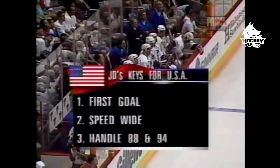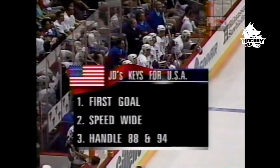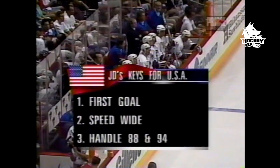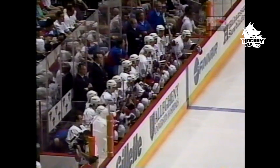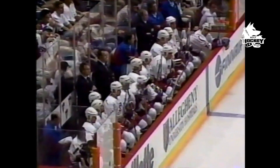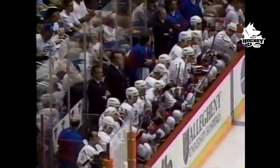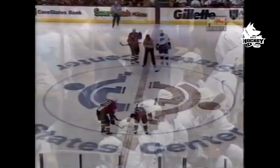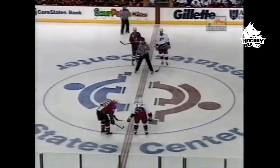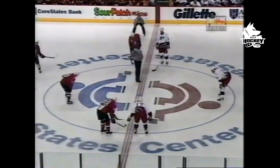Canada backing up as the game begins. Number 88 and 94 — Lindros and Shanahan — are on the same line. They're big forechecking forwards. Lindros is playing the right wing, starting the game with Sackick playing center. Their job is to forecheck and knock the US team backwards, bang in the corners. That's the game plan for them.